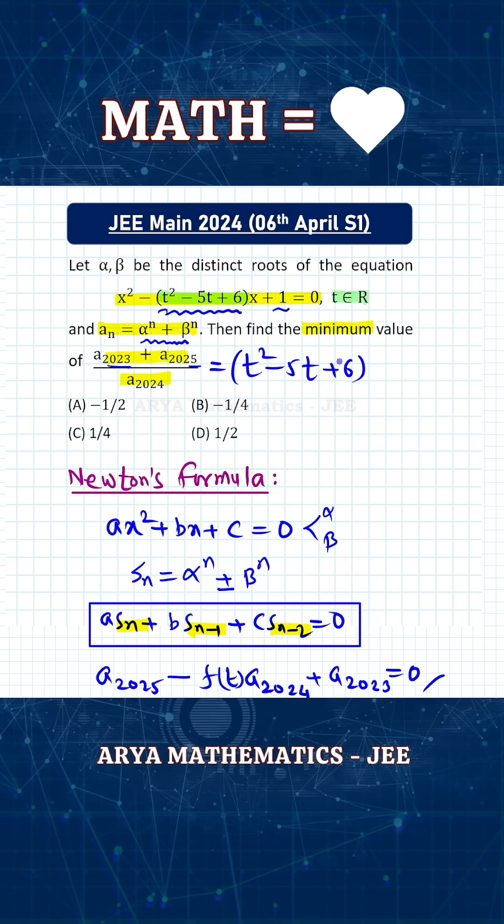So basically this expression will be t² - 5t + 6. And now the question is what is the minimum value of this expression and t can take any real value. So clearly you can see coefficient of t² is positive, so we will get minimum value at, we will get minimum value as -D/4a.